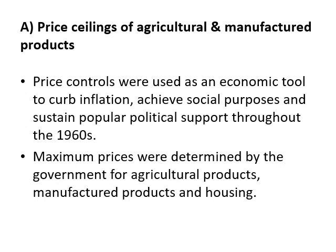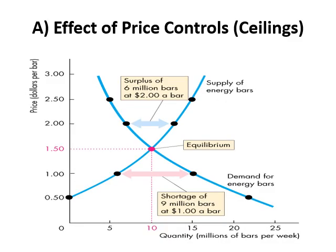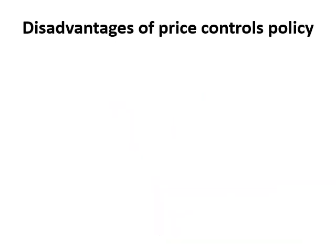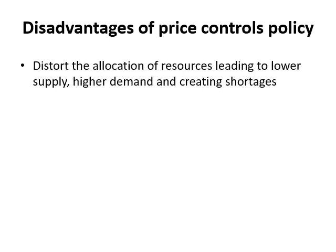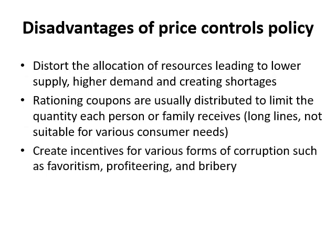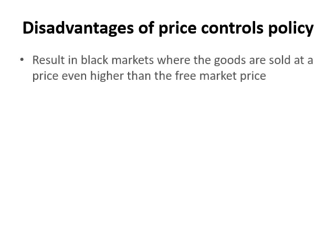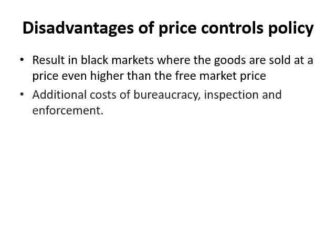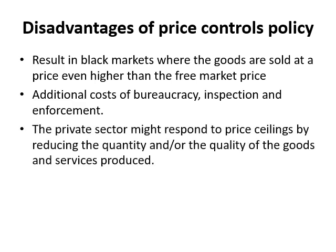Maximum prices were determined by the government for agricultural products, manufacturing products, and housing. However, the price control policy had negative impacts: it distorted the allocation of resources, leading to lower supply, higher demand, and shortages. Rationing coupons were distributed to limit the quantity each person or family received, resulting in long lines, not suitable consumer needs, incentives for corruption, and black markets where goods were sold at prices even higher than the free market price. Additional bureaucratic costs arose, and the private sector responded to price ceilings by reducing the quantity or quality of goods and services produced.